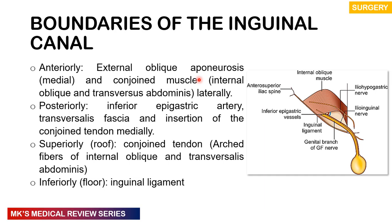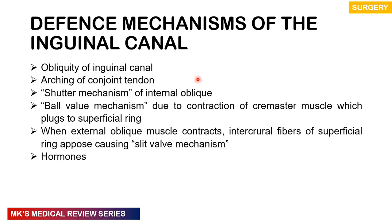There are defense mechanisms of the inguinal canal that normally prevent hernias: the obliquity of the tunnel itself, the arching fibers of the conjoined tendon, a shutter mechanism of the internal oblique, a ball-valve mechanism due to contraction of the cremaster muscle which plugs the superficial ring, and a slit-valve mechanism formed by the intercrural fibers when the external oblique contracts.